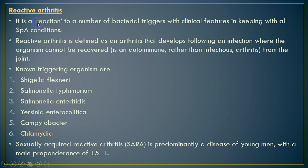Triggering organisms include Chlamydia (a sexually transmitted disease), Shigella, Salmonella typhimurium, Salmonella enteritis, Yersinia enterocolitica, and Campylobacter. The triggering infection can be divided into two groups: GIT infection (diarrheal illness) and genitourinary infection. In GIT-triggered disease, the male-to-female ratio is equal, but in genitourinary disease such as Chlamydia, it is predominantly a disease of men, with a male predominance of 15 to 1.